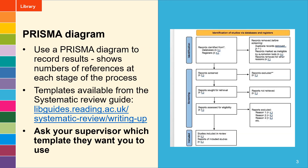You will need to include a PRISMA diagram in your results section, and this shows the number of references left at each stage of the screening process. There are templates available from the systematic review guide, but there are two versions of the template: the simple one as shown on the right of the screen.